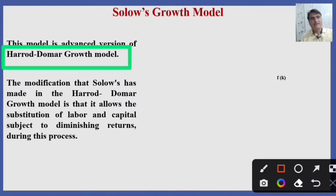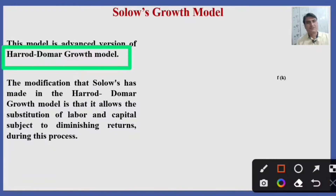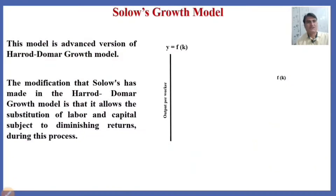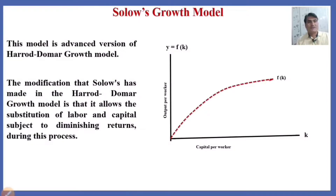However, Solow agrees that savings are essential to economic development and growth. Solow extended the Harrod-Domar Model and allows the substitution of labor and capital subject to diminishing returns. Y is a function of capital showing output per worker, and K on the x-axis is capital per worker. The output function is decreasing — when capital increases, total production initially increases with a decreasing tendency. The straight line shows N plus sigma, representing depreciation.